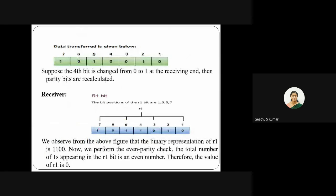The complete 7-bit data to be transmitted is 1 0 1 0 0 1 0. This is what the sender transmits. If the receiver receives the same data, there is no error. However, suppose that during transmission corruption occurs and the receiver receives 1 0 1 1 0 1 0 instead — a different value at one bit position.